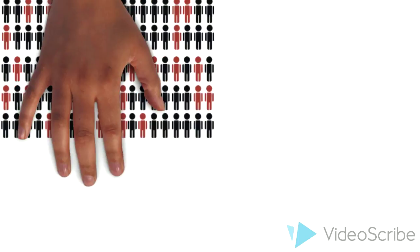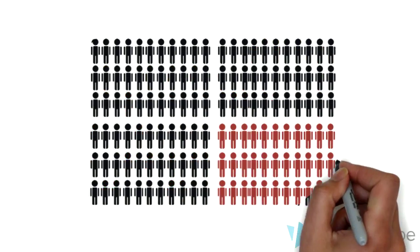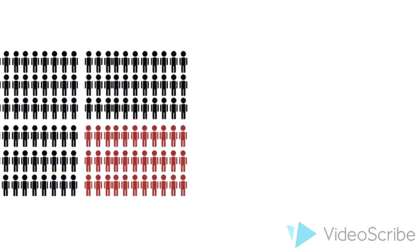If the couple theoretically have hundreds of children, we would notice that 25% of them are affected. Of course, this can never happen, because human couples just aren't capable of conceiving hundreds of children.